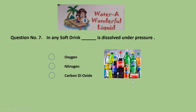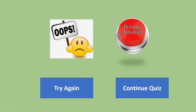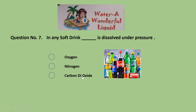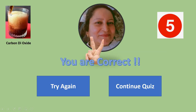Question 7: In any soft drink — and you must be enjoying drinking these drinks, students — DASH is dissolved under pressure. Which gas is it? Oxygen — wrong. Nitrogen — again wrong. The correct option is carbon dioxide. Give yourself 5 marks for this answer.